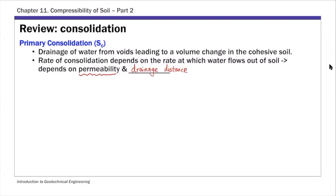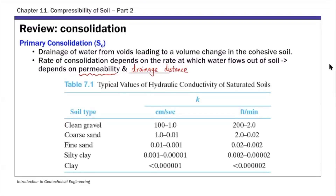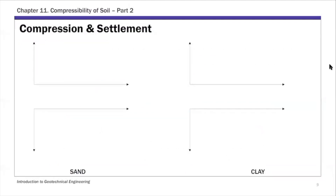Permeability comes from Chapter 7, Table 7.1, which lists the hydraulic conductivity — the coefficient of permeability — for different soil types. For clays, the permeability is very small. That is why in clays it typically takes a very long time for consolidation to happen: the low permeability means water takes a long time to drain. This is why the time rate is a concern in clays but typically not in sands.